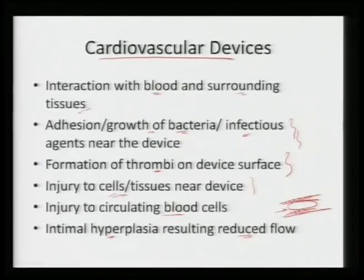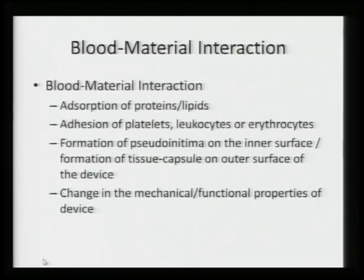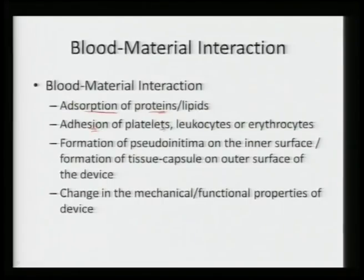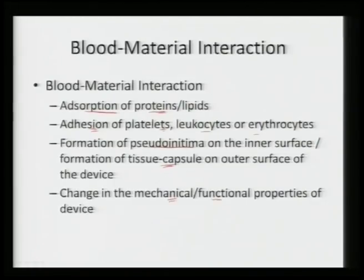Additionally, there can be intimal hyperplasia — excessive growth of cells — which can result in reduced flow because the available area for blood to pass through decreases. These are critical issues with cardiovascular devices since they remain in contact with blood cells and surrounding tissues, which can lead to infection by bacterial growth, thrombus formation on the device surface, injury to cells or tissues, or hyperplasia reducing blood stream flow.